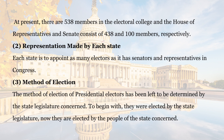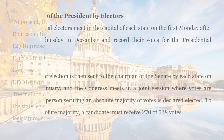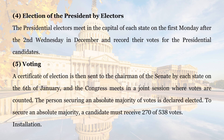To begin with, they were elected by the state legislature; now they are elected by the people of the state concerned. Election of the President by Electors. The presidential electors meet in the capital of each state on the first Monday after the second Wednesday in December and record their votes for the presidential candidates. A certificate of election is then sent to the Chairman of the Senate by each state on the 6th of January, and Congress meets in a joint session where votes are counted. The person securing an absolute majority of 270 of 538 votes is declared elected.